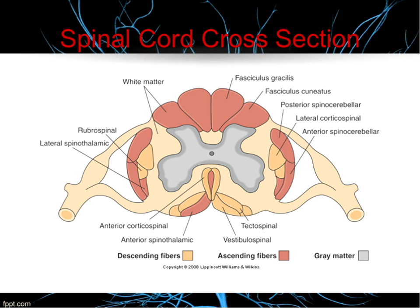The white matter may be myelinated or unmyelinated. An important thing to remember: the posterior portion of the spinal cord deals with sensory, and the anterior portion deals with motor. An easy way to remember that is A for action.